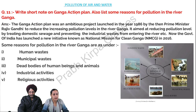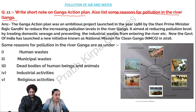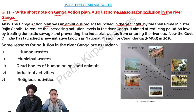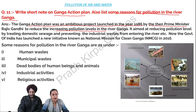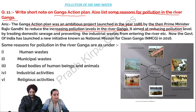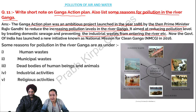Write a short note on the Ganga Action Plan and also list some reasons for pollution in the river Ganga. The Ganga Action Plan was an ambitious project launched in the year 1986 by then Prime Minister Rajiv Gandhi to reduce the increasing pollution levels in the river Ganga. It aimed at reducing pollution levels by treating domestic sewage and preventing industrial wastes from entering the river.